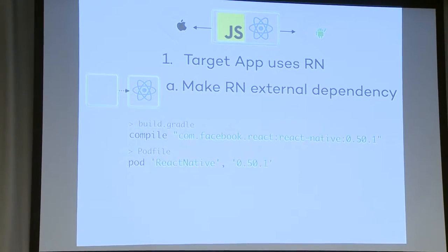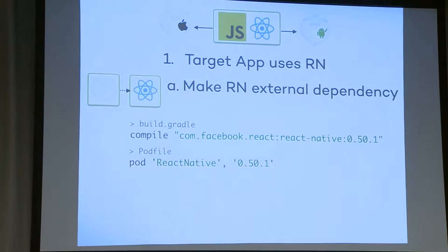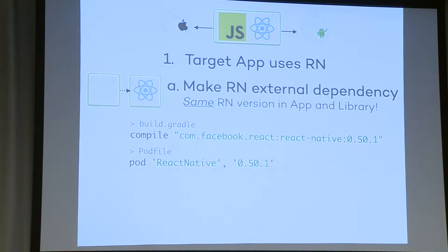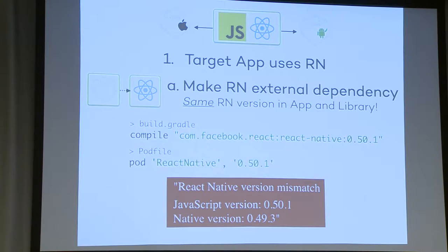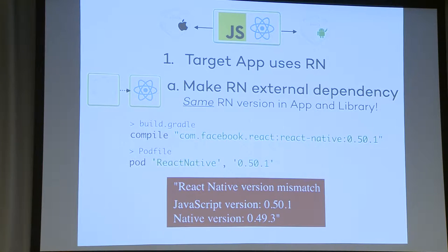Facebook does not provide AARs on Maven Central — well, they do, but the version is 0.20, which is about 15 months outdated. They're probably waiting for version 1.0 before publishing to Central. You could do the same with CocoaPods. But the really big caveat is you have to have the same React Native version in both the app and the library, because the React Native team forces you to have JavaScript and native implementation within the same version. If your app has one version and library another, nothing will work.